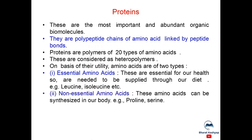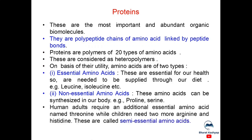Then non-essential amino acids. These amino acids can be synthesized in our body. For example, proline and serine. Human adults require an additional essential amino acid named threonine while children need two more arginine and histidine. These are called semi-essential amino acids.